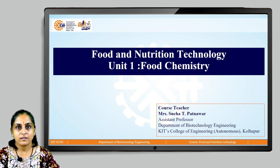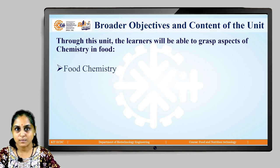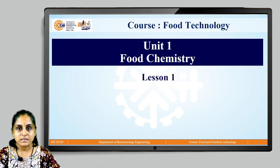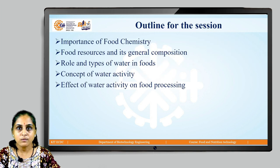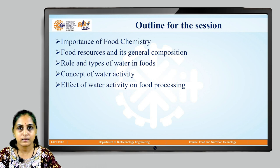I am here with a course named Food and Nutritional Technology and today we are going to look at Unit 1, which is Food Chemistry. Through this particular unit, the learners will be able to grasp the aspects of Food Chemistry. The outline for the session includes importance of Food Chemistry, food resources and its composition, different types of water in food, the role of water, concept of water activity, and effect of water activity on food processing.